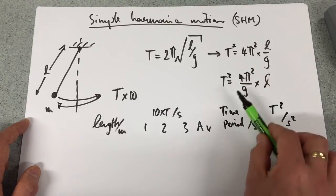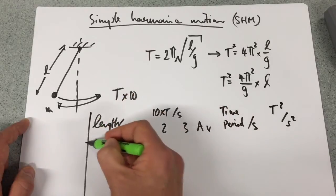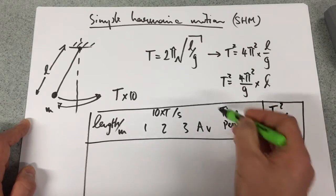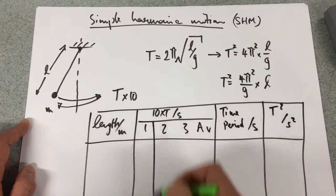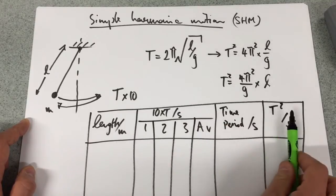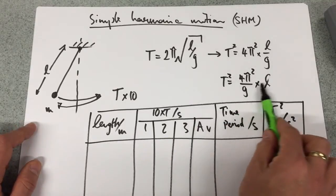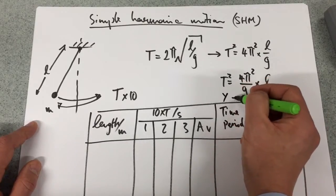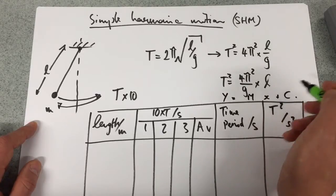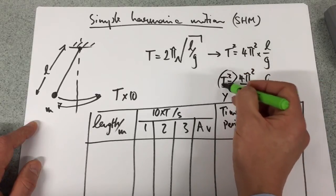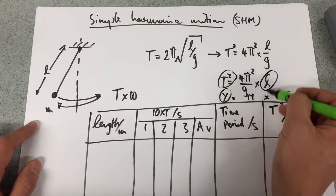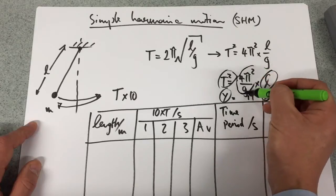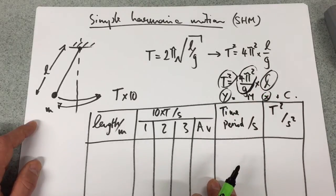Okay. So there is my table of results. Sorry about that small error at the beginning there. All will become clear now, however, as to why we need the time period squared. Because essentially, if this holds true, and Y equals MX plus C, if I plotted T² on my Y axis and L on my X axis, then I should get a straight line with the gradient equaling to 4π²/G.